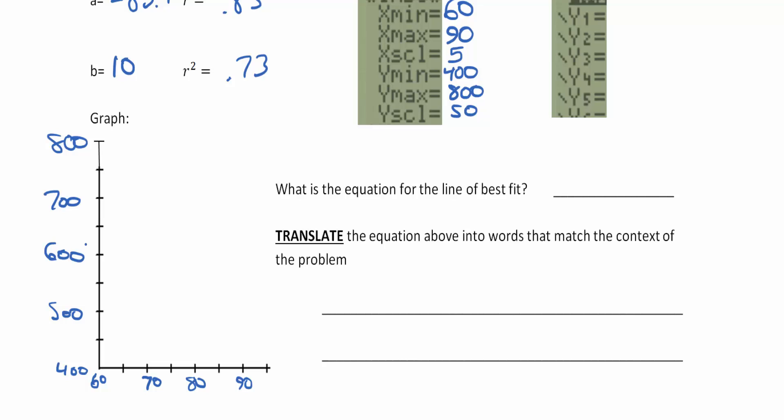Now I'm going to look at my data table and plot some points here. So 60 went to 450 which is right here. 65 went to 525, so I'm going to put my little dot there. 70 was at 675.